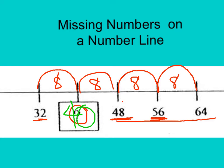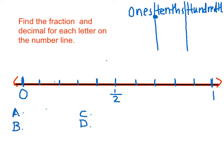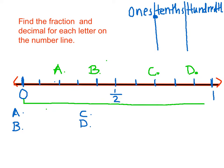Now we're going to move on to some decimals. Find the fraction and decimal for each letter on the number line. I'm going to mark some letters on this number line. The very first thing we want to do is look at our number line and figure out what it's counting by. I'm going from 0 to 1 right here, so I'm only dealing with the decimals between 0 and 1.